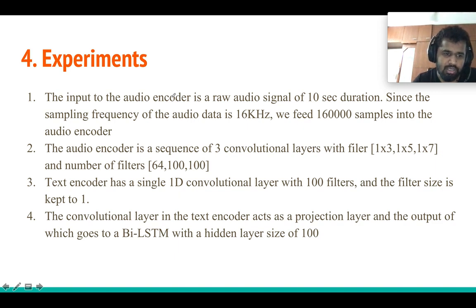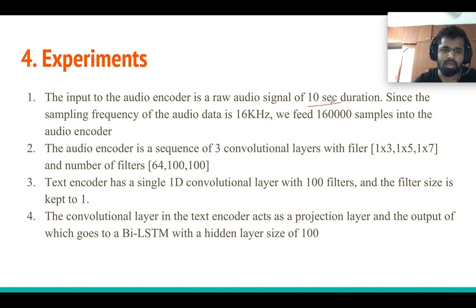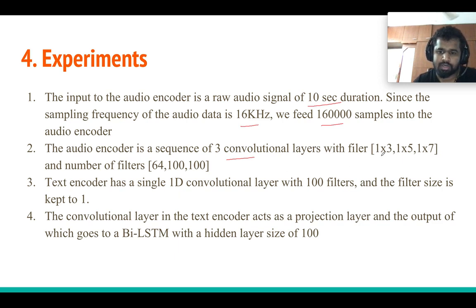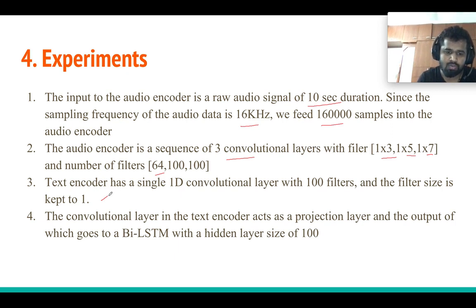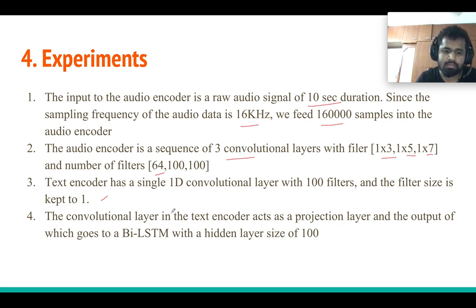For the experiments, we use 10 seconds of audio as input to the model, sampled at 16 kHz, feeding approximately 160,000 samples into the audio encoder. We use three convolution layers in the audio encoder with specific kernel sizes and numbers of kernels. Both the audio encoder and text encoder use a BiLSTM with hidden size 100.